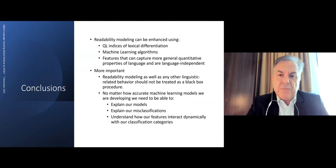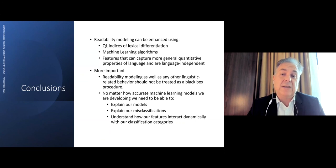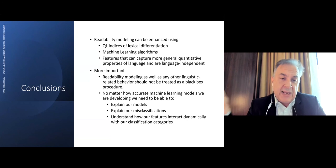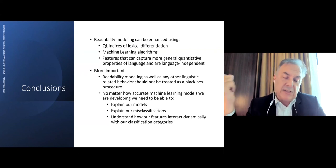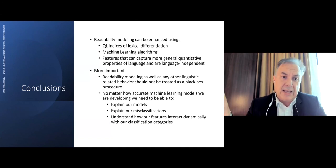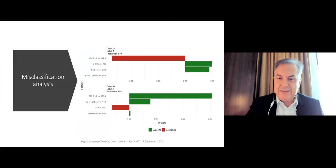Wrapping up: readability modeling can be enhanced using quantitative linguistic indices of lexical differentiation, machine learning algorithms, and features that capture general quantitative properties of language while remaining language-independent. No matter how accurate machine learning models we develop, we need to be able to explain our models, explain our misclassifications, and understand how our features interact dynamically with our classification categories. This is all about advancing our interpretability capabilities in AI. AI should not be a black box. AI should be trusted, and in order to be trusted, we have to really understand how it takes decisions.